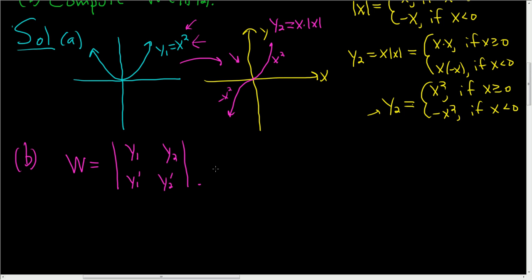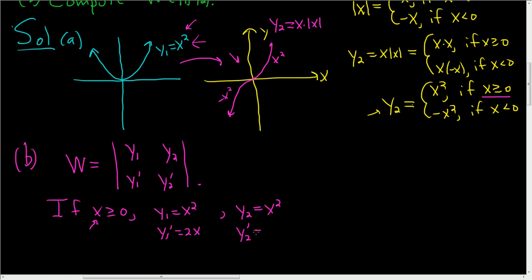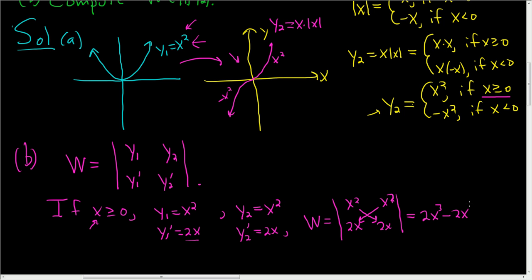First, let's look at the case where x is greater than or equal to 0. We know that y1 is always equal to x squared, so the derivative of y1 is 2x. If x is greater than or equal to 0, y2 equals x squared using the first piece, so the derivative of y2 is also 2x. Looking at the Wronskian, we get the determinant with y1=x squared, y1 prime=2x, y2=x squared, y2 prime=2x. Taking the determinant: x squared times 2x minus x squared times 2x gives 2x cubed minus 2x cubed, which equals 0.